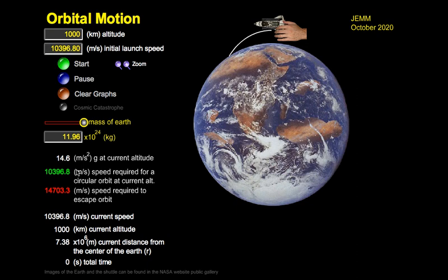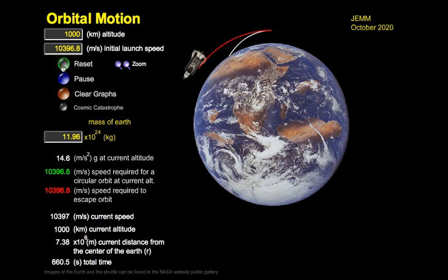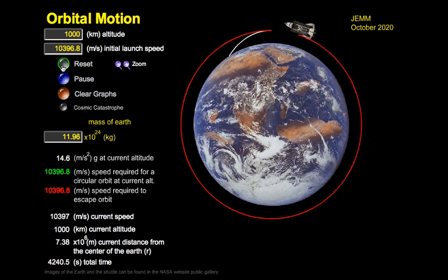Well, according to the program, it's 10,396.8. Let's try that. And notice now, with more gravity, with greater gravitational attraction, we need a higher speed to orbit the planet.